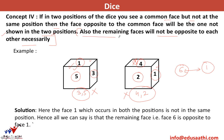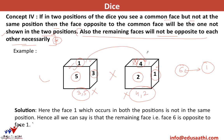The remaining faces will not be opposite to each other necessarily. So don't conclude that face five will be opposite to face two here — that is not true. This is something we did in the previous concept when the relative position of the face shown in both figures does not change. These are the only four concepts you need to know in dice.